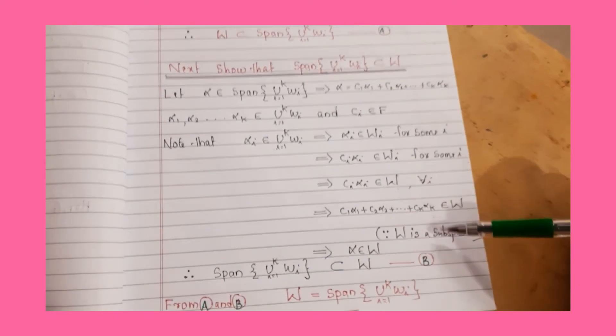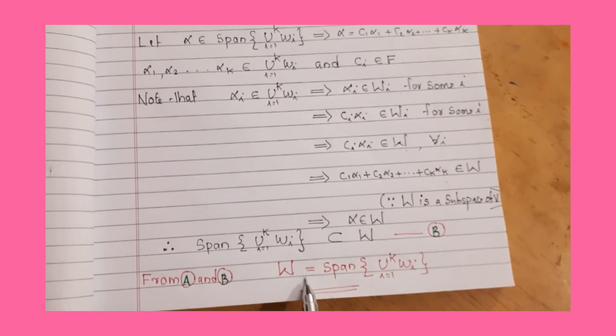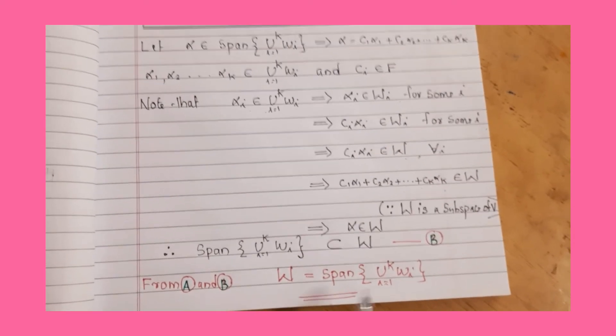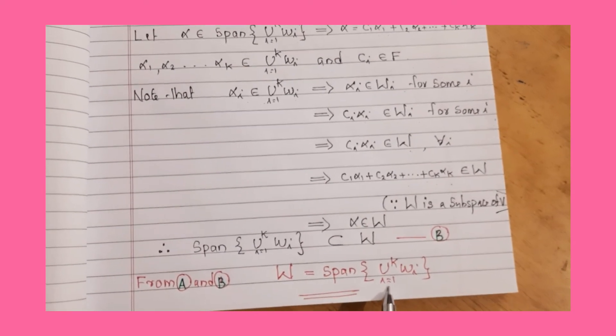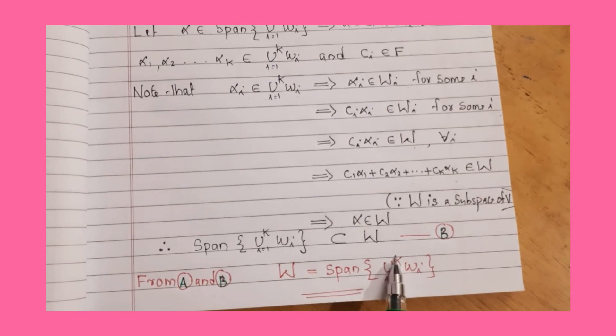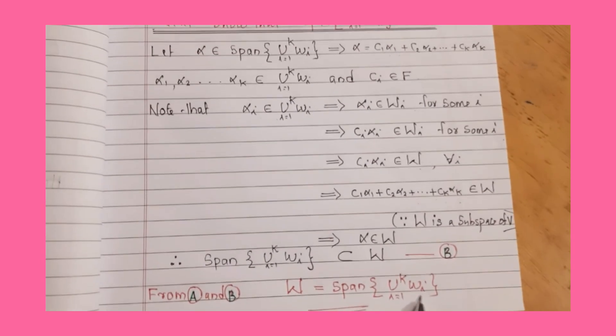From A and B, we conclude that W = span of union Wi for i running from 1 to k. Clear?